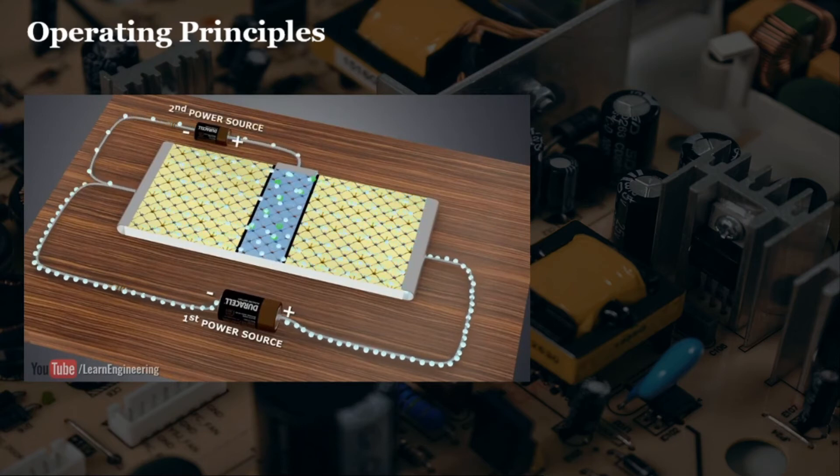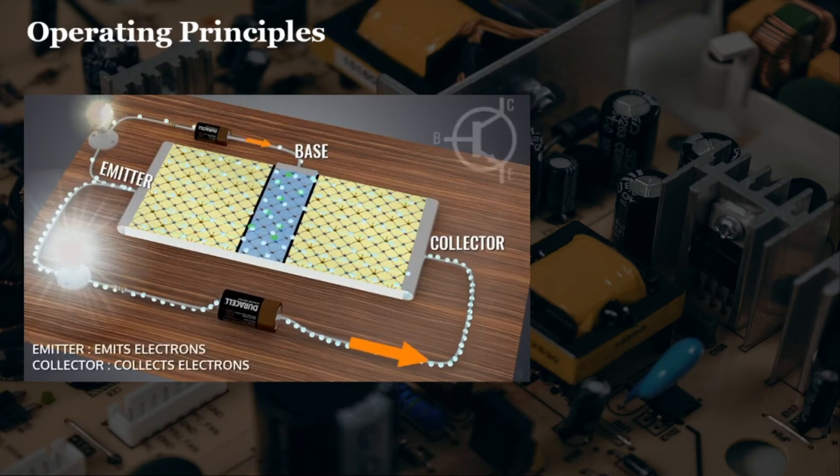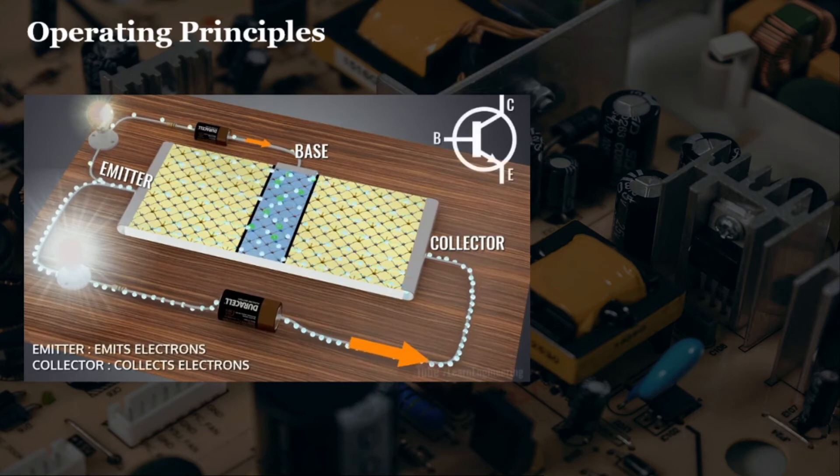There's an amplification factor as we can observe here. Collector current makes the load brighter, emit more light compared to the bulb on the base.